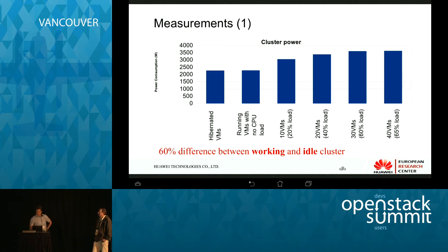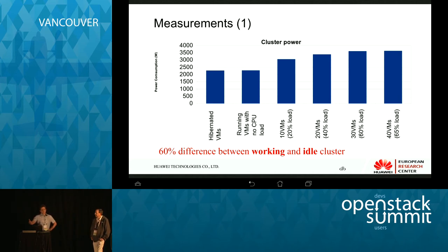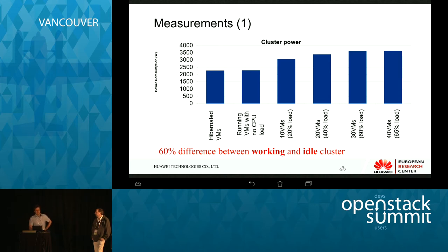We basically maxed out the system with 40 VMs — after that, power consumption would not increase anymore. That was due to the number of nodes we had available. At that point, the management interface reported just 65% load, but that was because we had reserved some nodes.